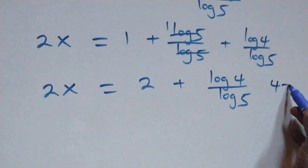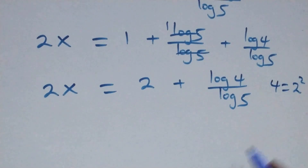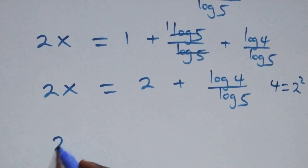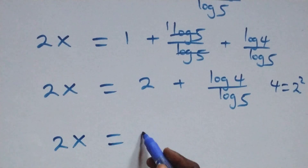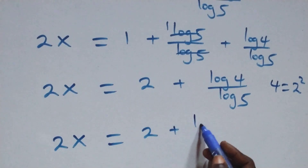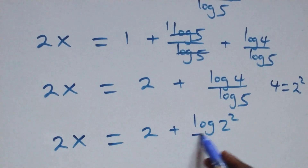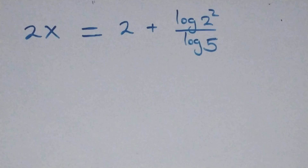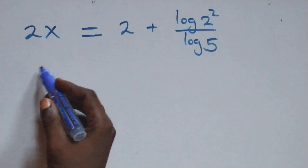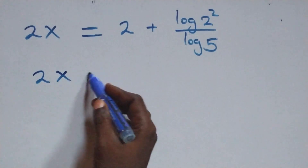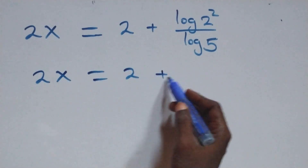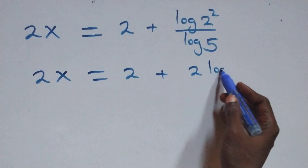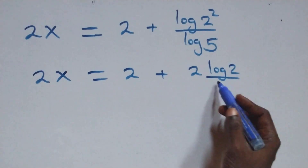We can write 4 as 2 times 2, that is 2 squared. All we have becomes 2x equals 2 plus log(2 squared) over log 5. We apply the power rule of logarithms, so 2 comes down in front, and all we have becomes 2x equals 2 plus 2 log 2 over log 5.